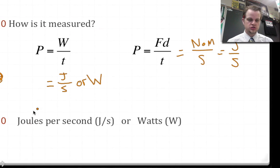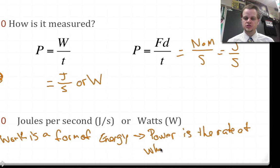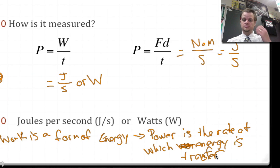Oh, again, just to remember, work is a form of energy. So, power is the rate at which work, or sorry, energy is transferred. So, if work is the transfer of energy, or the creation, not creation of energy, but the transfer of energy, power is the rate at which that energy is transferred.